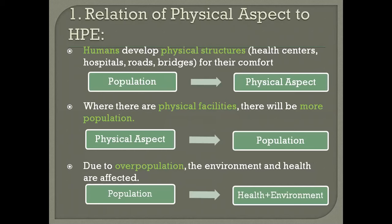Let's look at the relation of the physical aspect to health, population, and environment. Physical aspects are the non-living things which can be natural as well as man-made. We have already discussed examples of these. Now let's see how physical aspects are related to health, population, and environment.